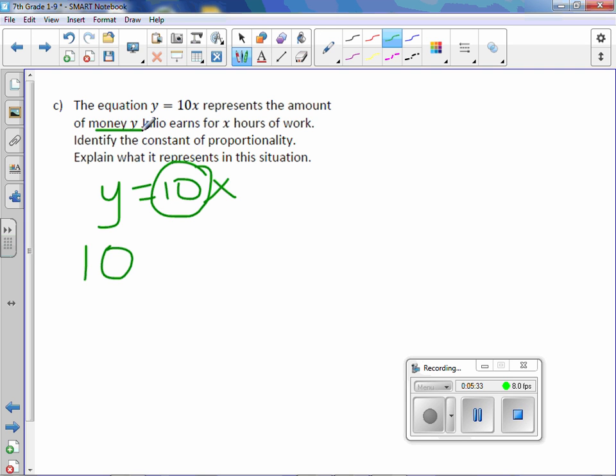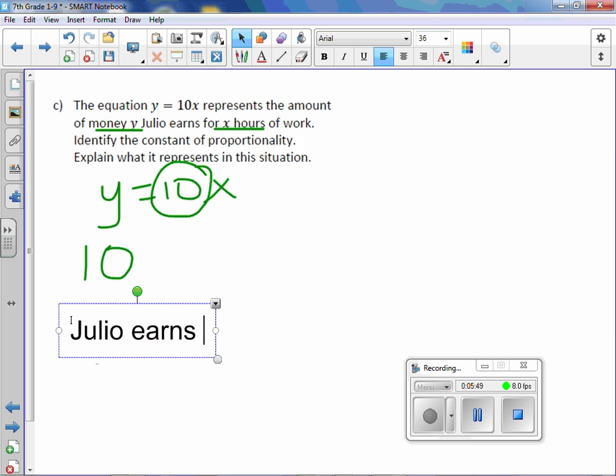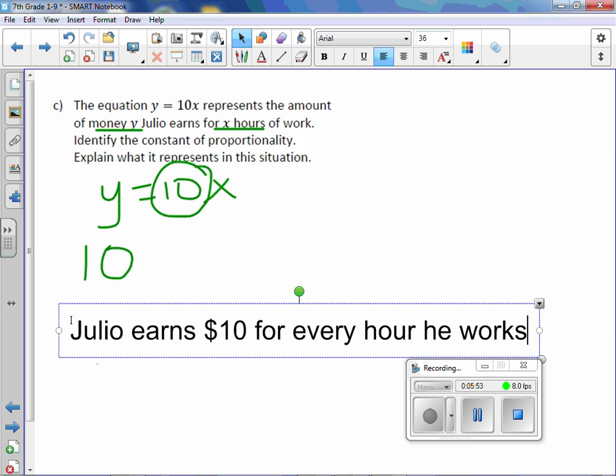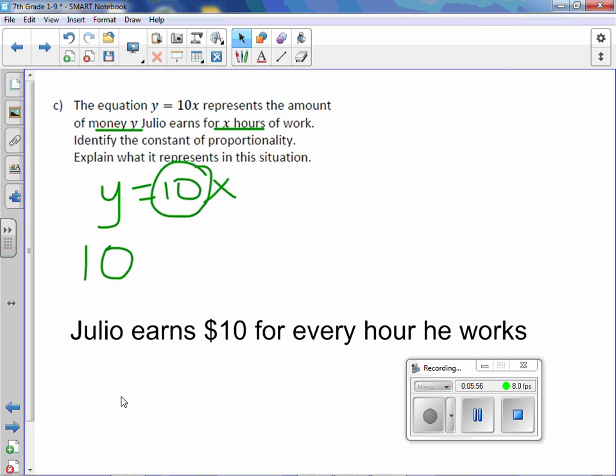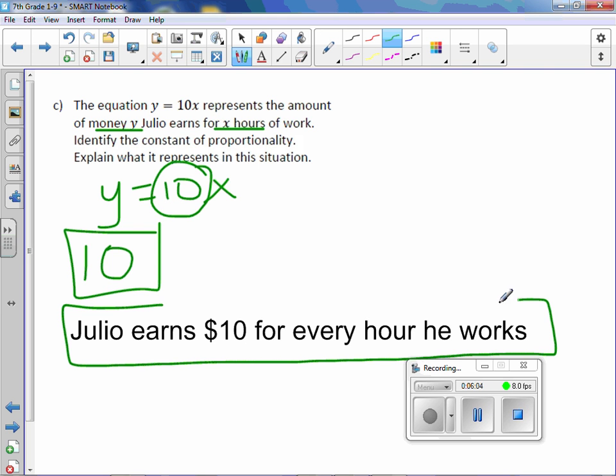We are talking about money earned in x hours. So it means Julio earns, I'm going to type this I think. Julio earns $10 for every hour he works. So our answer for constant of proportionality is 10, and explaining what it means is underneath.